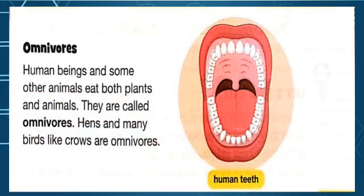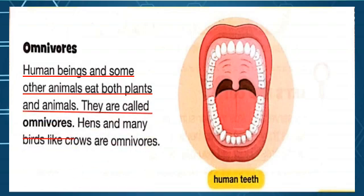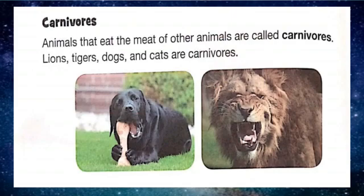Omnivores: human beings and some other animals eat both plants and animals — they are called omnivores. Underline these lines. Hens and many birds like crows are omnivores. Some omnivores hunt and eat their food, but some others eat dead matter. Omnivores eat plants, but not all kinds of plants. We are all omnivores — we eat both plants and other animals.